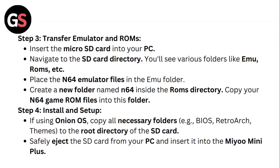Step 3: Transfer the emulator and ROMs. Insert the micro SD card into your PC and navigate to the SD card directory. You'll see various folders like Emu, Roms, etc. Place the N64 emulator files in the Emu folder, then create a new folder named N64 inside the Roms directory and copy your N64 game ROM files into it.